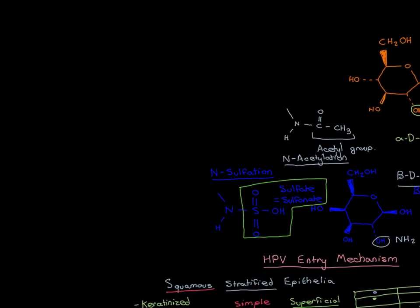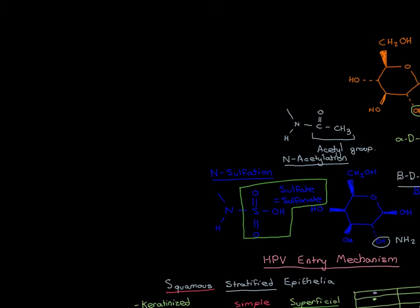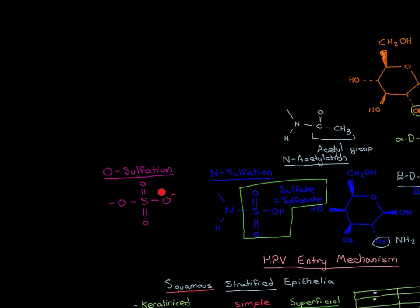O-sulfation is where the sulfate group is added onto an alcohol group rather than the amino group. Here the oxygen of the alcohol group has the sulfate group bound onto it — sulfur with two oxygens double-bonded, and the remaining alcohol group sometimes with no proton, leaving an oxygen with a negative charge. Some of these alcohol groups will have the proton and some won't — a dynamic equilibrium.